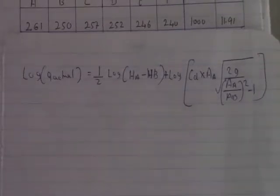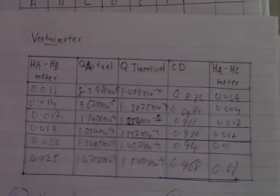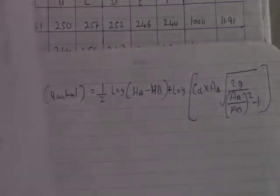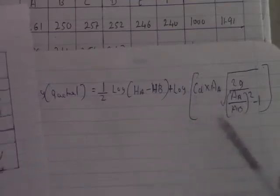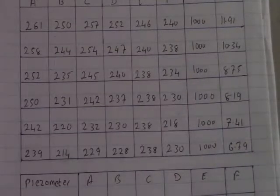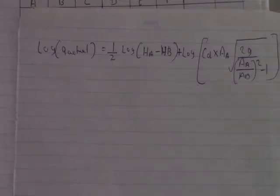Using this equation, we calculate log Q actual for each test from 1 to 6. For the first term: ½ × log(Ha − Hb), substitute 0.011 for test 1. For the second term: log of [Cd × Area_A × √(2g / ((A_A/A_B)² − 1))], where Cd = 0.832, Area A = 530.9 × 10⁻⁶ m², and Area B = 201.1 × 10⁻⁶ m². All units must be in meters.